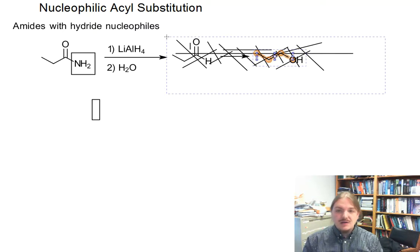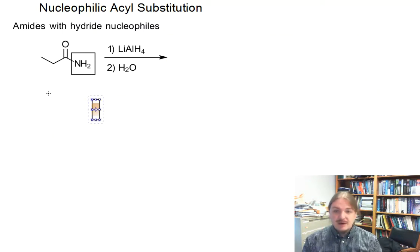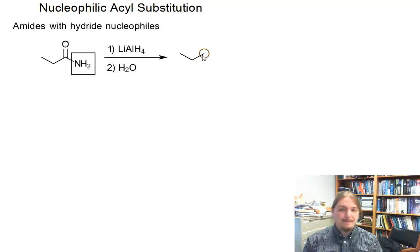The product of the reduction of an amide with lithium aluminum hydride is not an aldehyde or an alcohol. It is an amine. So what's going on here?